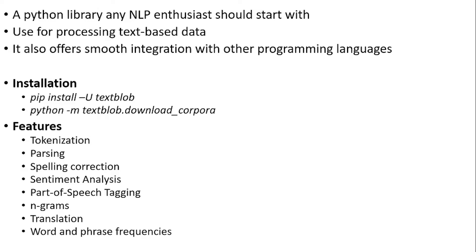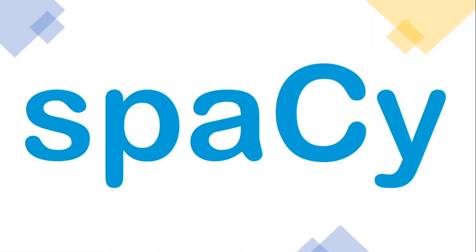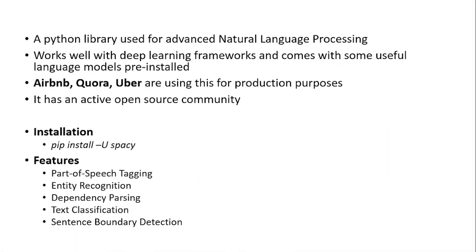The second library is spaCy. It's also a Python library which is used for advanced natural language processing. It works very well with deep learning frameworks and comes with useful pre-installed machine learning models. Companies like Airbnb and Quora are using this library for their production purposes, and it has an active open source community as well.